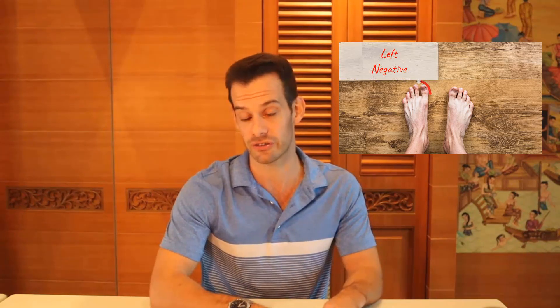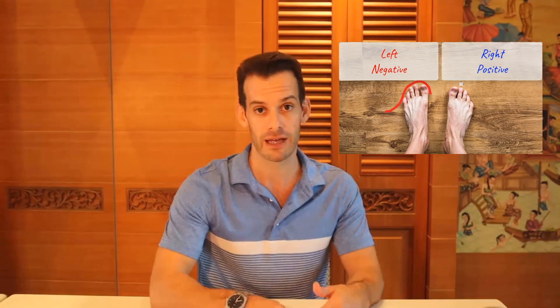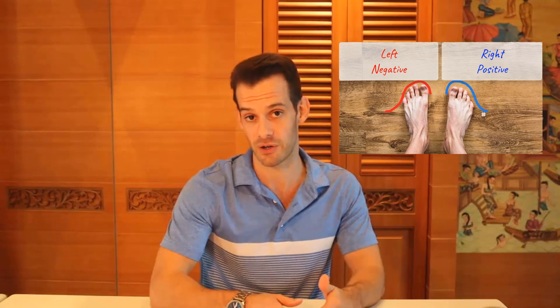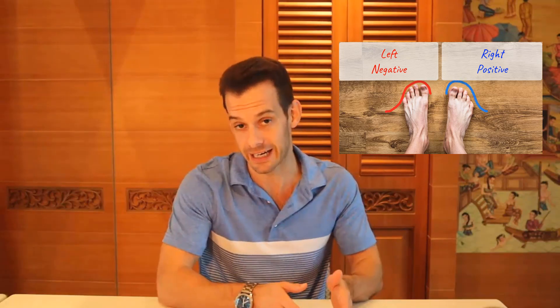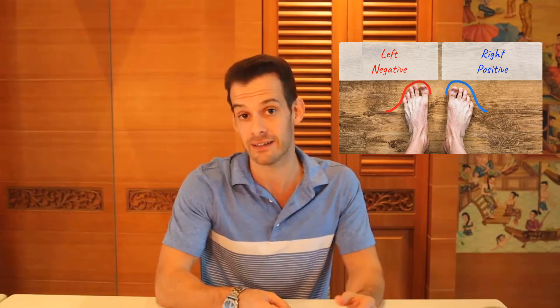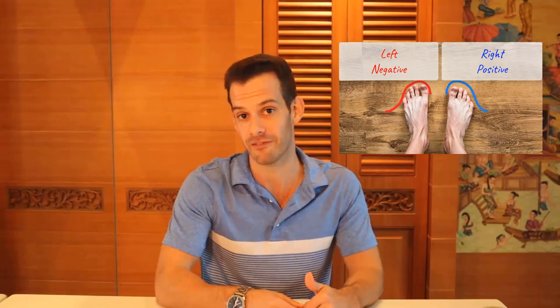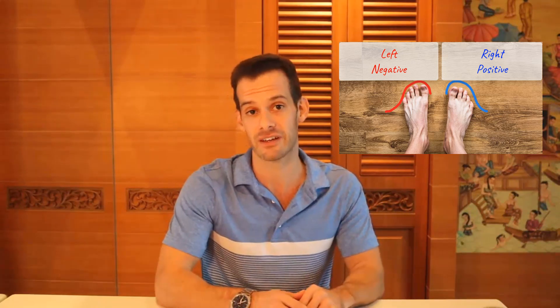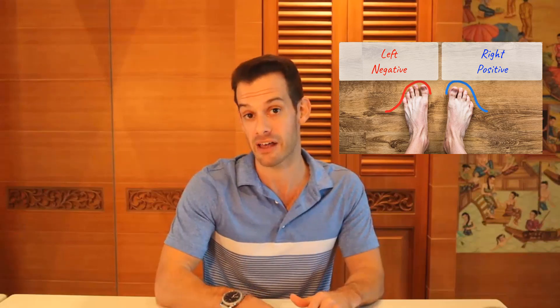An easy mnemonic to remember this is to simply look down at your feet, because your left foot will resemble the shape of a left skewed distribution, or a negatively skewed distribution, and the shape of your right foot will resemble a right skewed distribution, or a positively skewed distribution. And to remember which is negative and which is positive, you can remember the phrase 'having two left feet' being a negative assessment of your dancing ability. So that will remind you that the left is the negative skew, and therefore the right foot would be the positive skew.